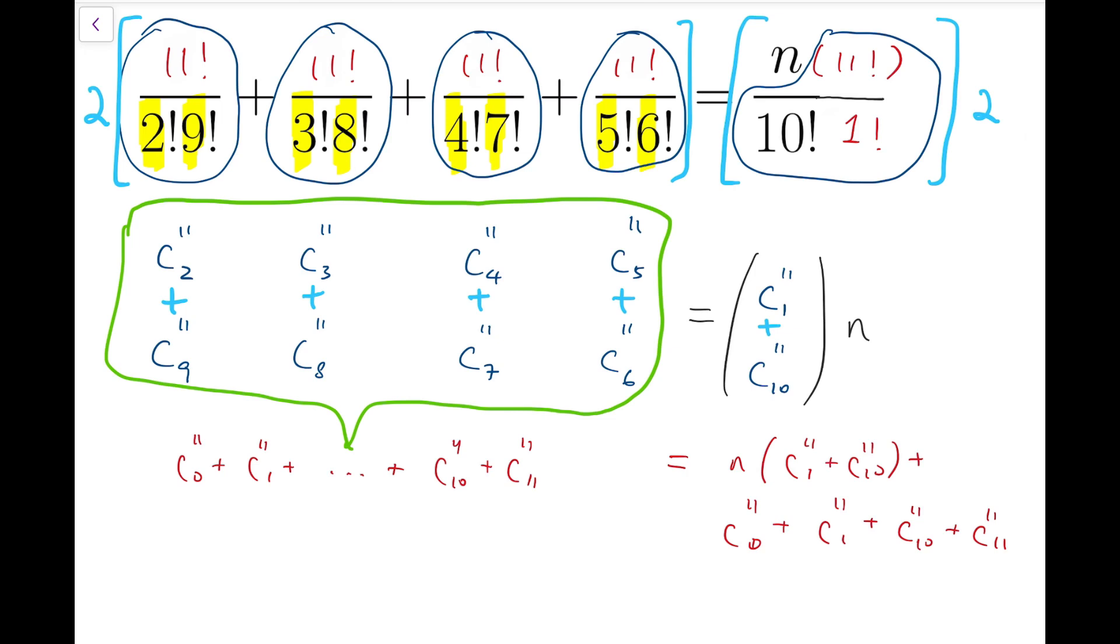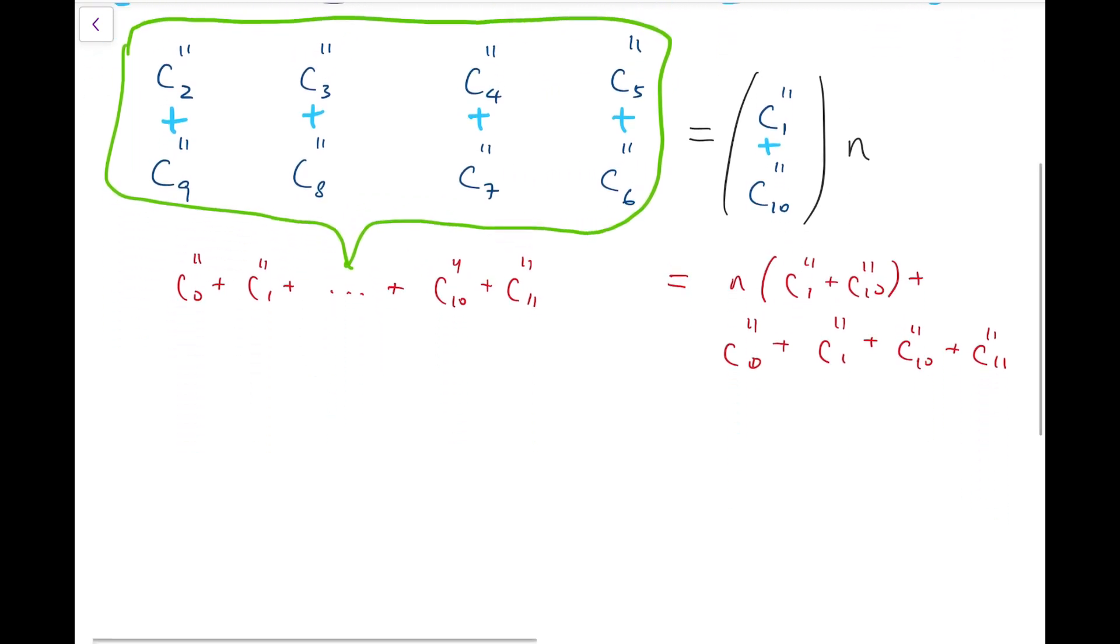Now the wonderful thing is these terms are actually very easy to compute. You can even do this by intuition. The number of ways to choose 0 items from 11 of them is just 1, which is just to not choose them at all. The number of ways to choose one item among 11 of them is just picking one at a time. So that's exactly 11.